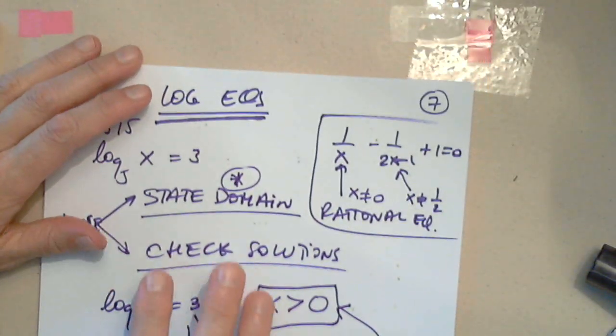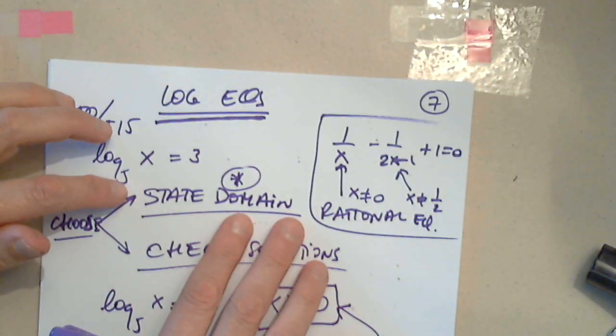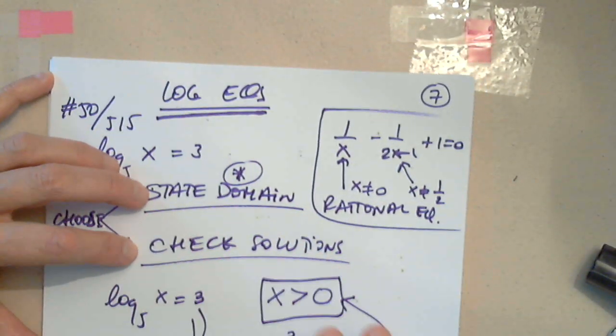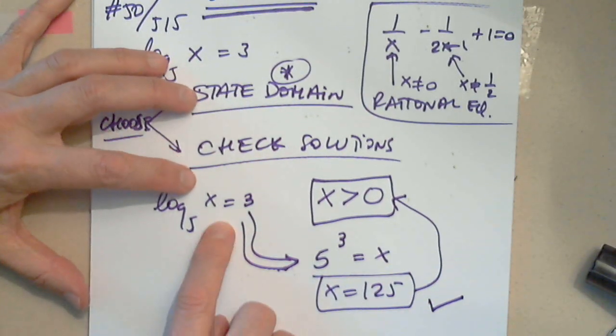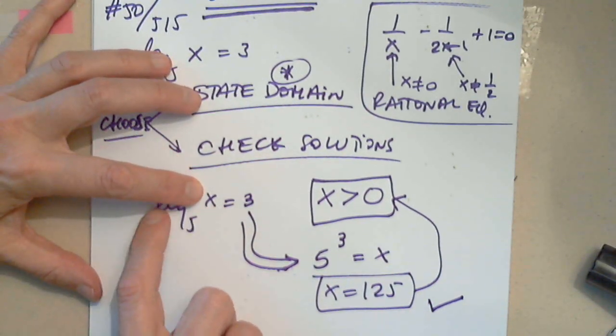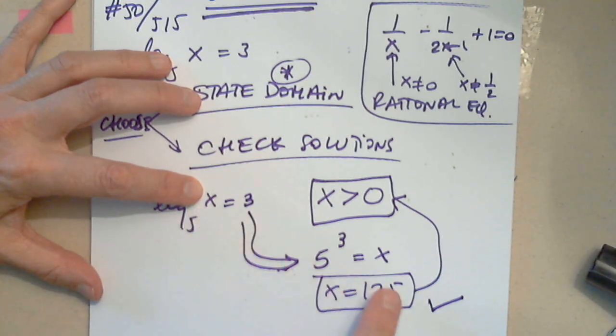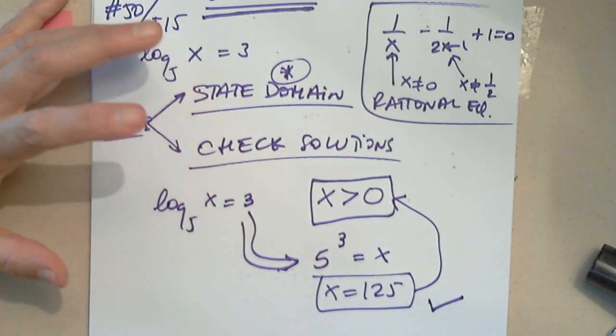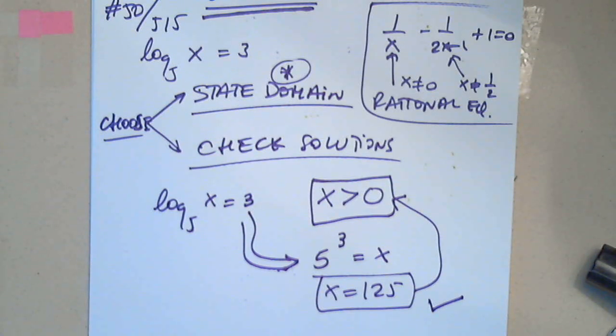If you're not using the method of stating the domain, then you have to go back and check. Plug in 125. Log base 5 of 125, 5 raised to the 3rd power is 125, so that's correct. So it's up to you which method is better for you.